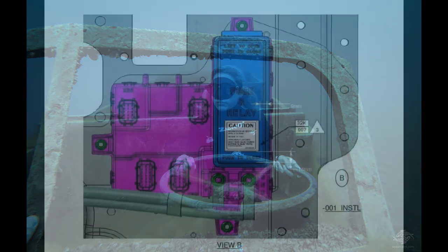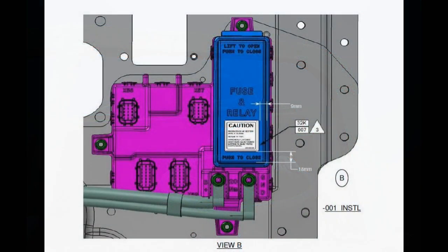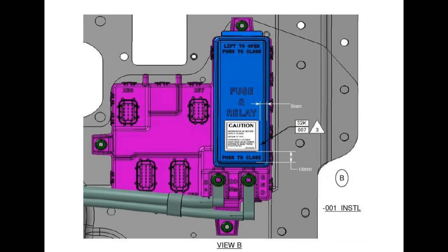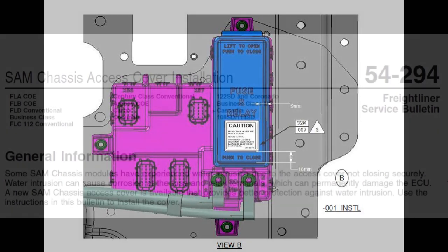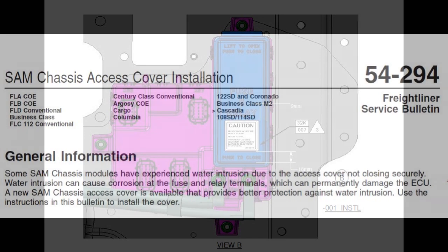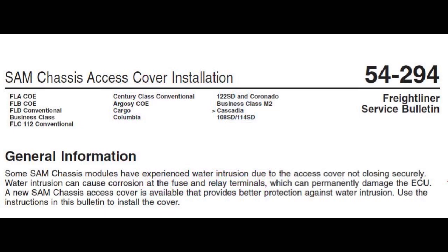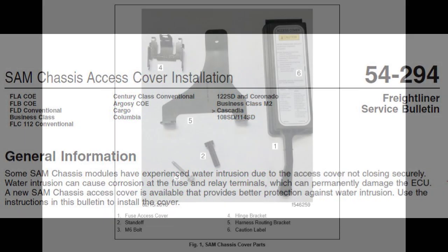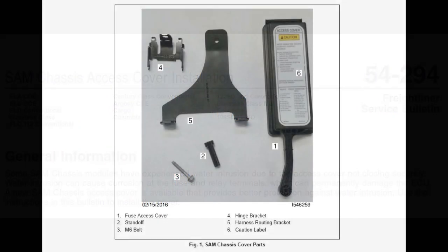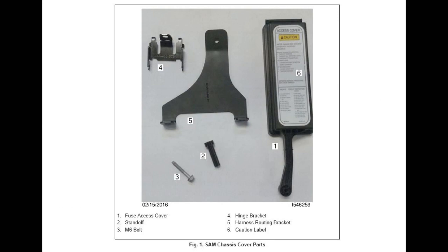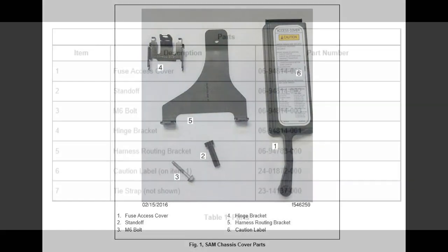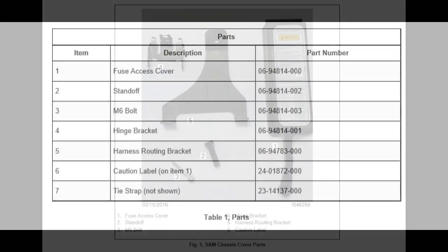There's been a number of recalls and campaigns focusing on protecting cab-mounted ECUs from water. It's gotten better, but it's still not perfect. One of the main issues that was addressed was updating the exterior cover to provide better sealing against moisture. Its insulation is mentioned in Bulletin 54-294.